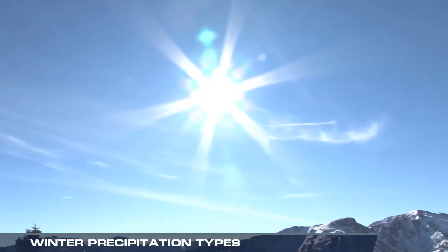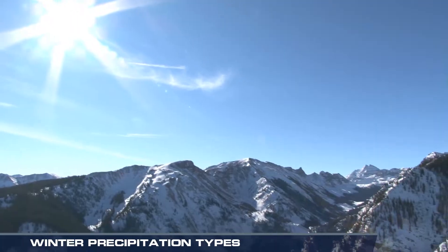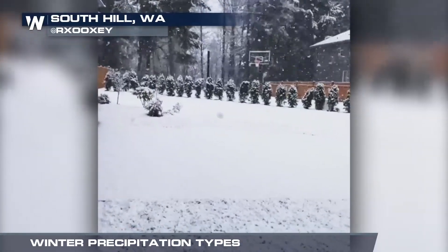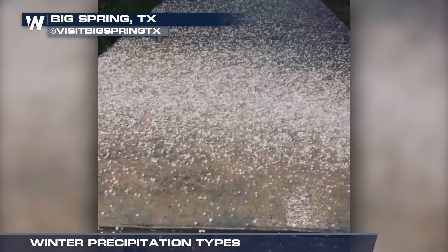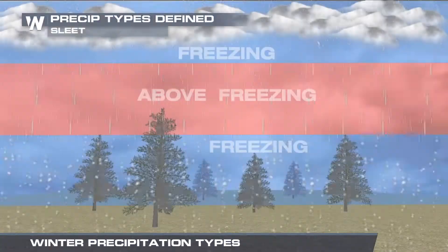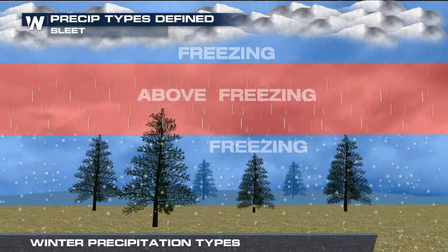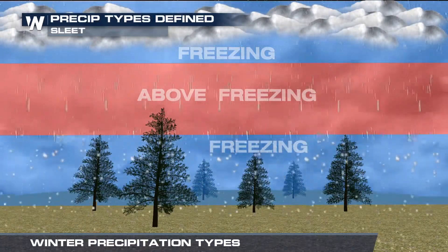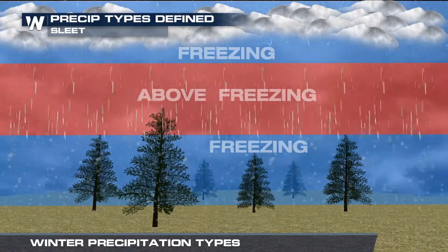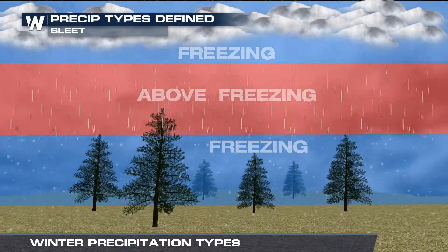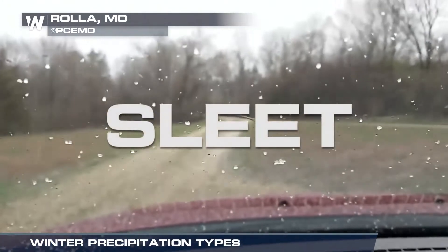But when warm air works its way in, things begin to change. The depth of this warm layer of air determines what type of precipitation will fall. When a thin layer of warm air cuts through the atmosphere, the snow only briefly melts. With cold air still near the ground, it can refreeze into ice pellets. This process creates sleet.